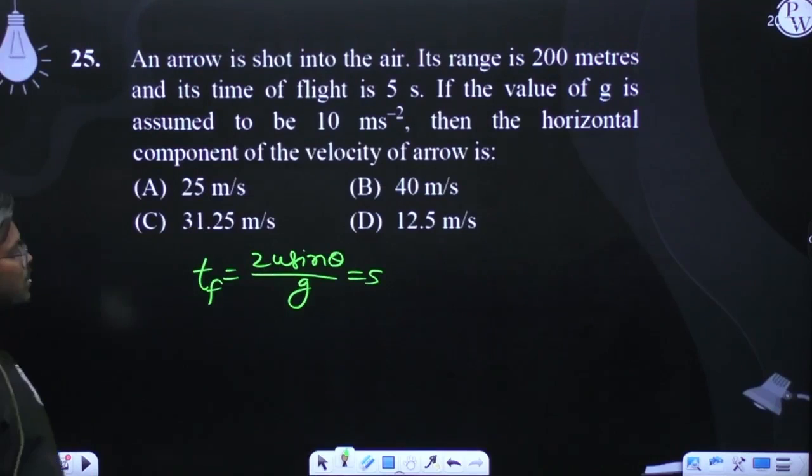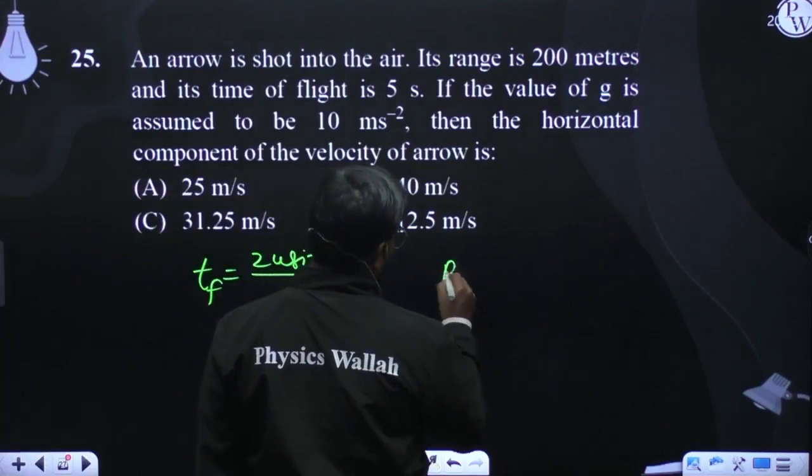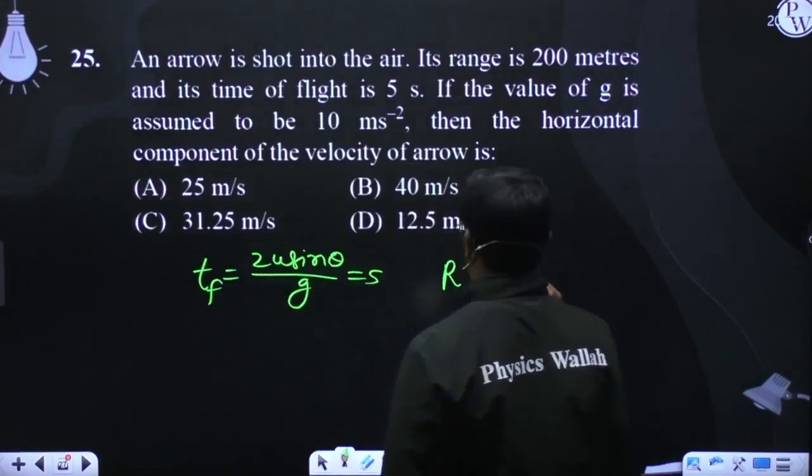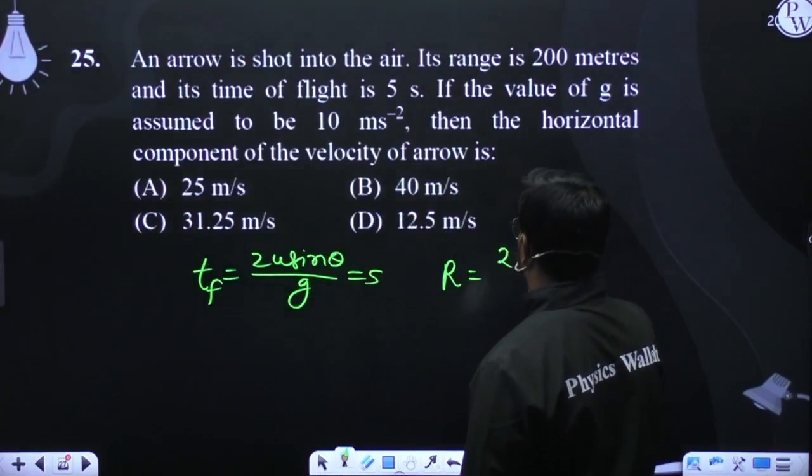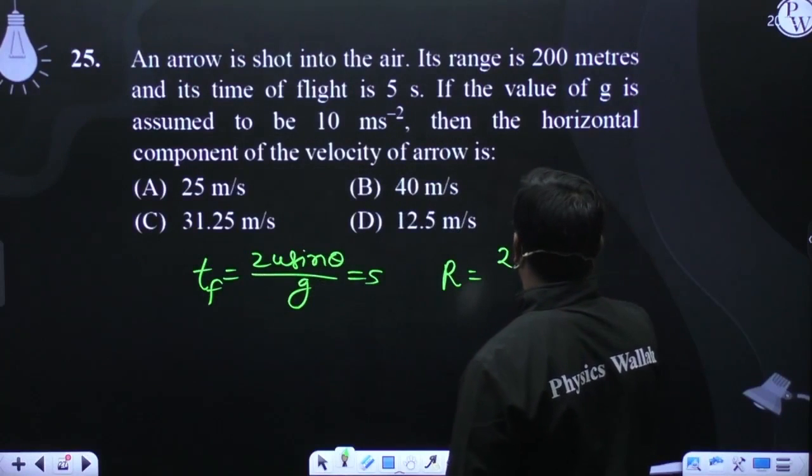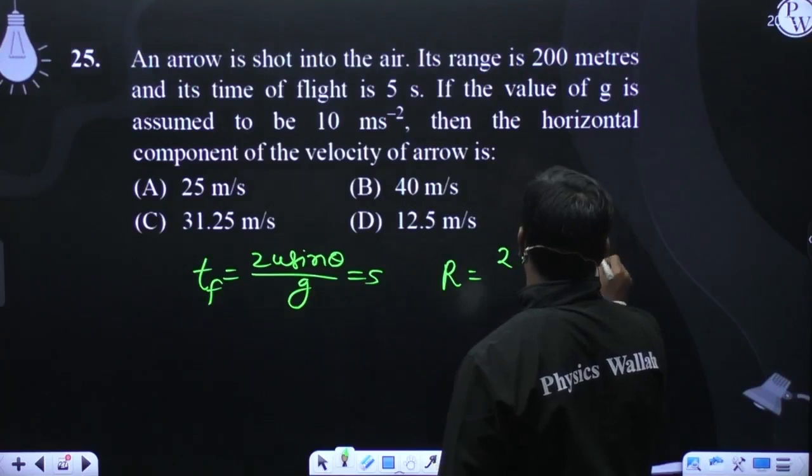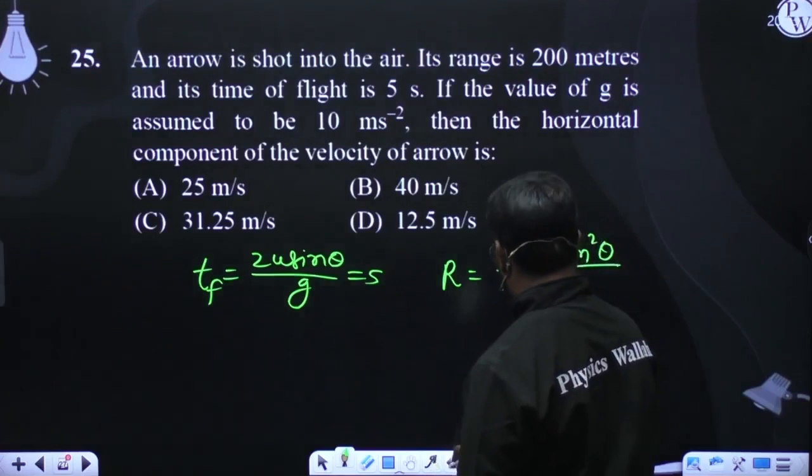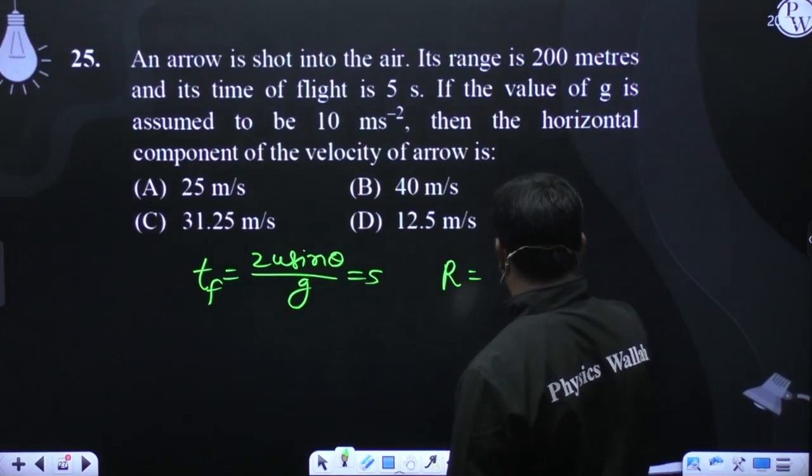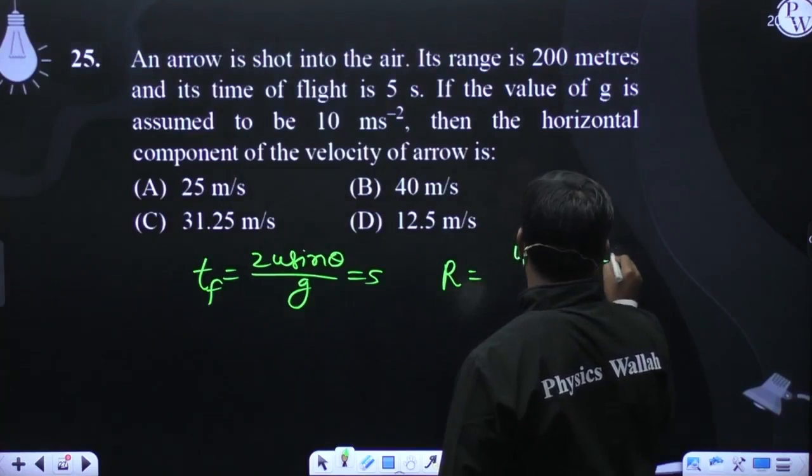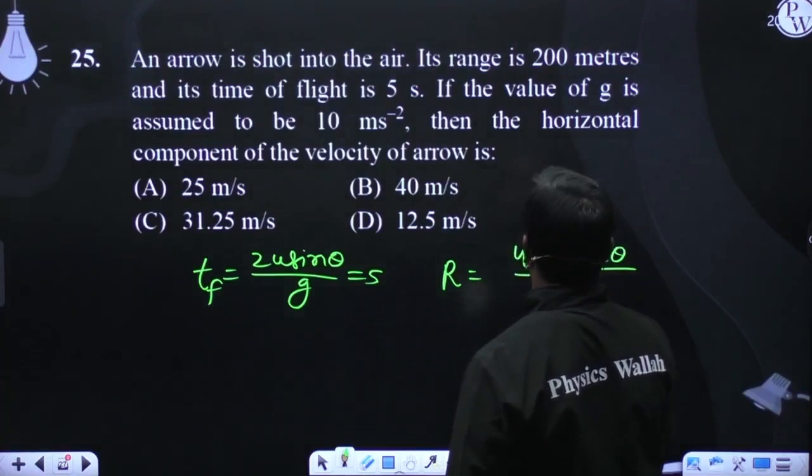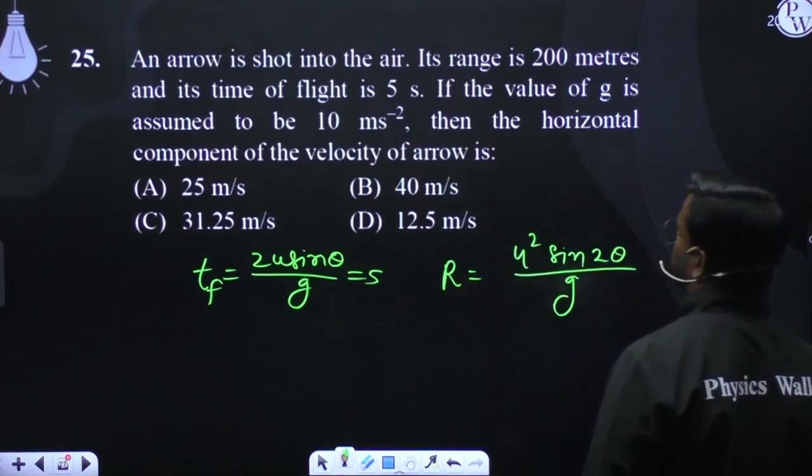Now we will talk about R. R equals u square sin 2 theta upon g. This is the range.